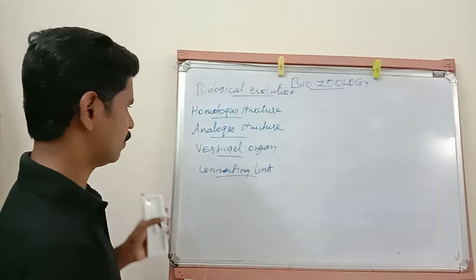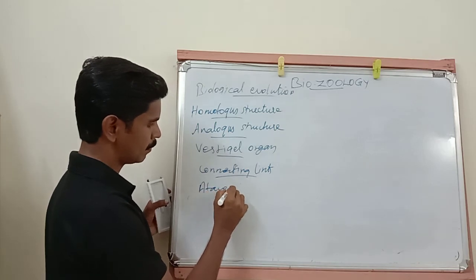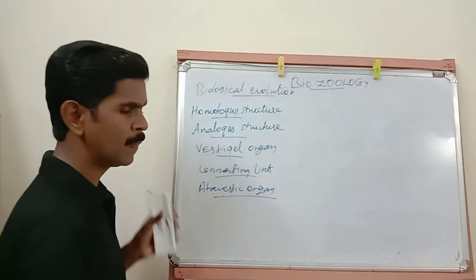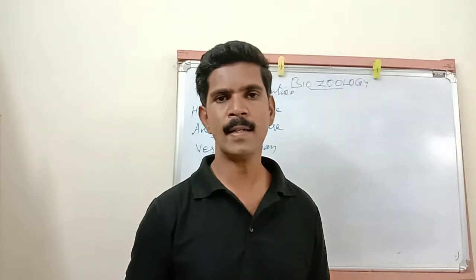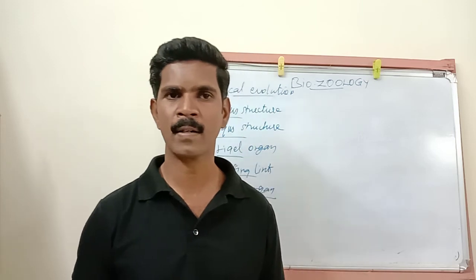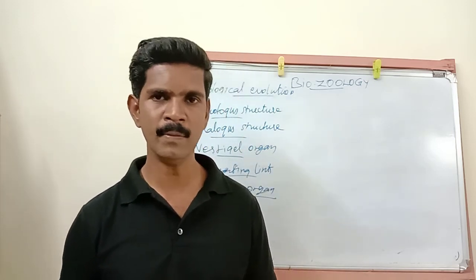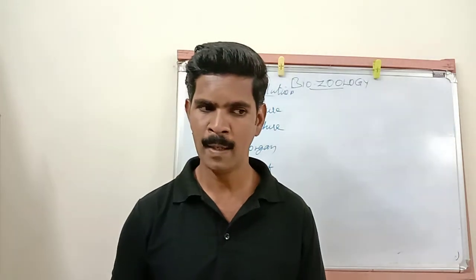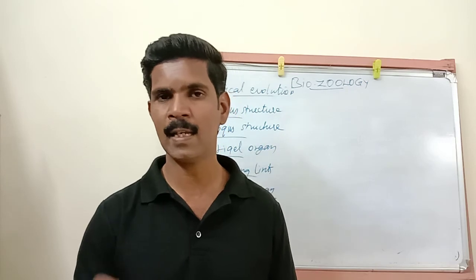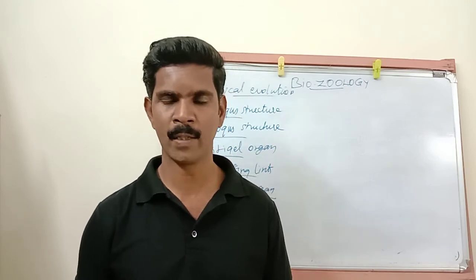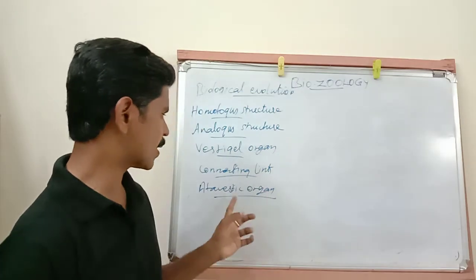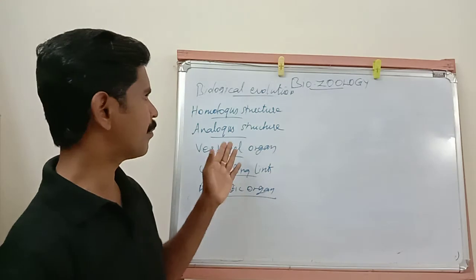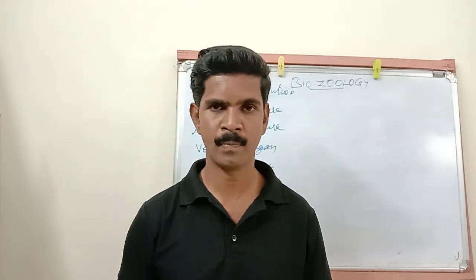The last topic is atavistic organ. Atavistic organ means the sudden appearance of a vestigial organ in an organism. For example, the appearance of a tail-like structure in a newborn human baby is an example of an atavistic organ. Now we have completed five important two-mark topics.